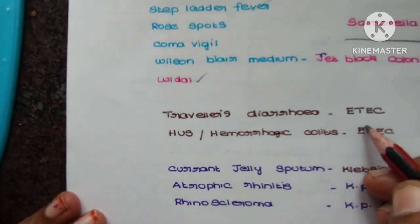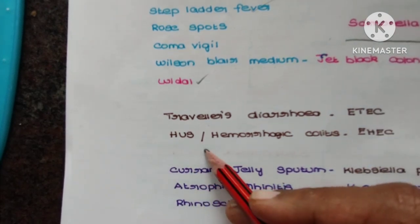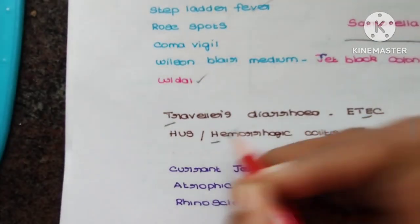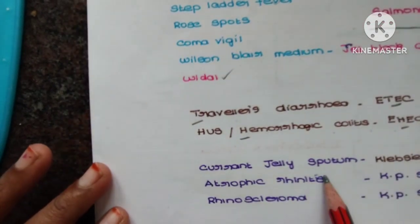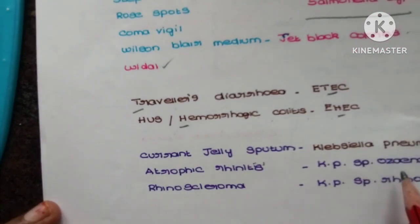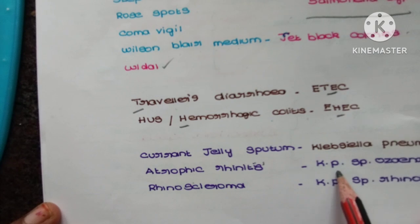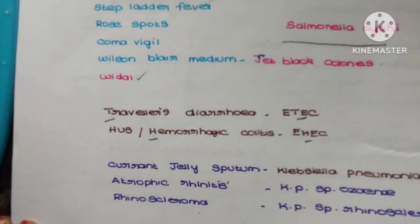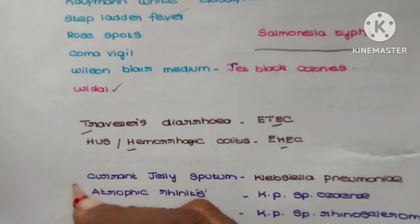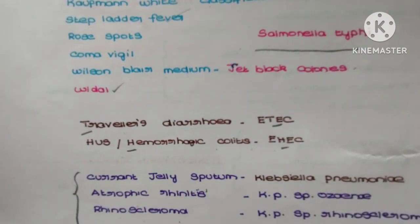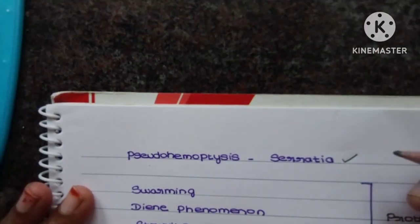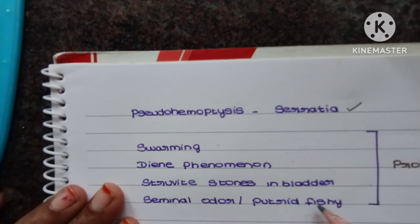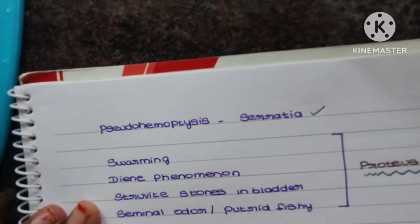Next: traveler's diarrhea is caused by ETEC (enterotoxigenic E. coli); hemolytic uremic syndrome or hemorrhagic colitis is caused by EHEC (enterohemorrhagic E. coli) — remember 'T for T, H for H.' Currant jelly sputum or brick-red colored sputum is for Klebsiella pneumoniae; atrophic rhinitis and rhinoscleroma are caused by Klebsiella subspecies. Pseudohemoptysis is associated with Serratia marcescens. Swarming, Dienes phenomenon, struvite stones in the bladder, and seminal or putrid fishy odor indicate Proteus species.